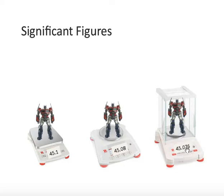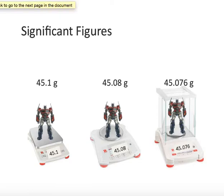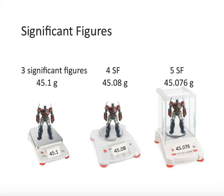Notice that if you were to round the more precise numbers, they would round to the less precise readings. So, for the first scale, 45.1 grams represents three significant figures — the 4, 5, and 1. The second reading represents four significant figures. And finally, the last scale gives us five significant figures.